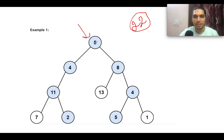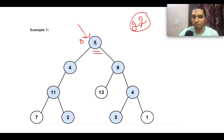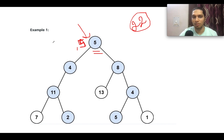Let's start the iteration. The running sum is zero and we're at the root of the binary tree, which has value 5. I'm going to add 5 to the running sum, so the total sum gets updated to 5. I'll also create an array list and add 5 onto it.